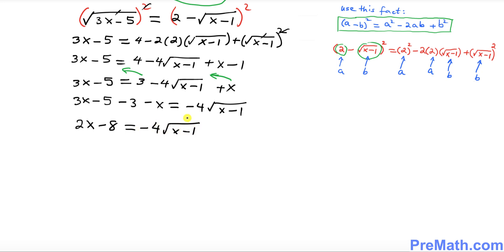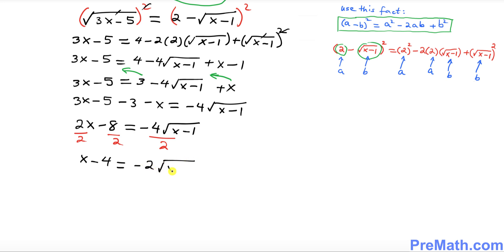Notice that each term is divisible by 2, so divide everything by 2 to simplify. This gives us x minus 4 equals negative 2 times square root of x minus 1.